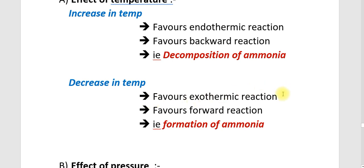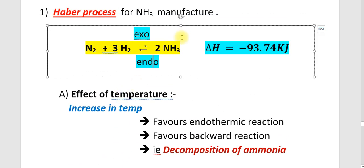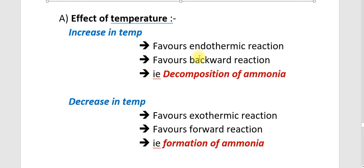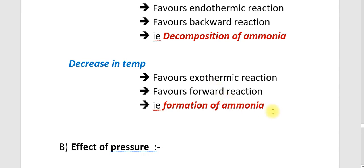A decrease in temperature favours the exothermic reaction. We know that the exothermic reaction is the forward reaction — that is, it favours the forward reaction, which is the formation of ammonia. So in order to increase the formation of NH3, we want to decrease the temperature. Then only more formation of ammonia will take place.